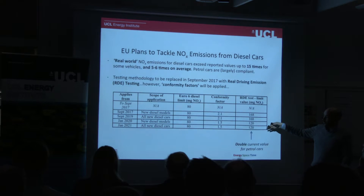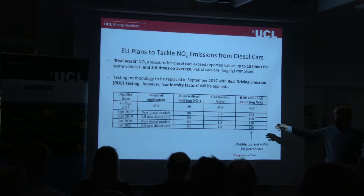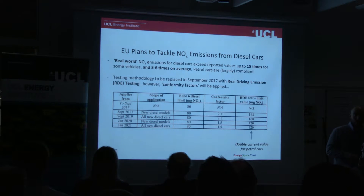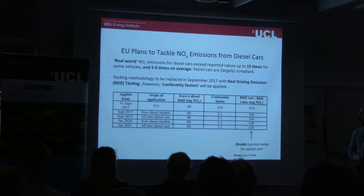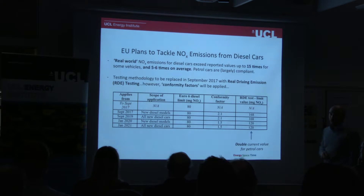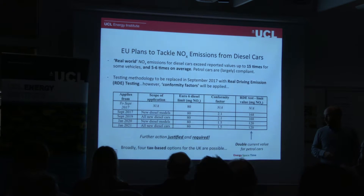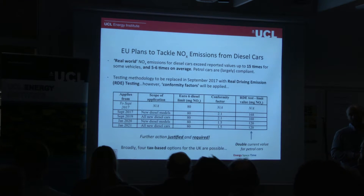That will then reduce to 1.5 times the limit in 2020 and 2021. This means that in 2021, diesel cars will be permitted to emit NOx at a rate double that of existing petrol cars. Further action to tackle NOx emissions from diesel cars is therefore required and justified.